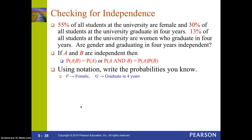I'm going to use F for female and G for graduate in four years. So F is my A and G is my B. The 55% is P(F), the 30% is P(G), and the 13% is P(F and G) — the probability that you're female and graduate in four years.